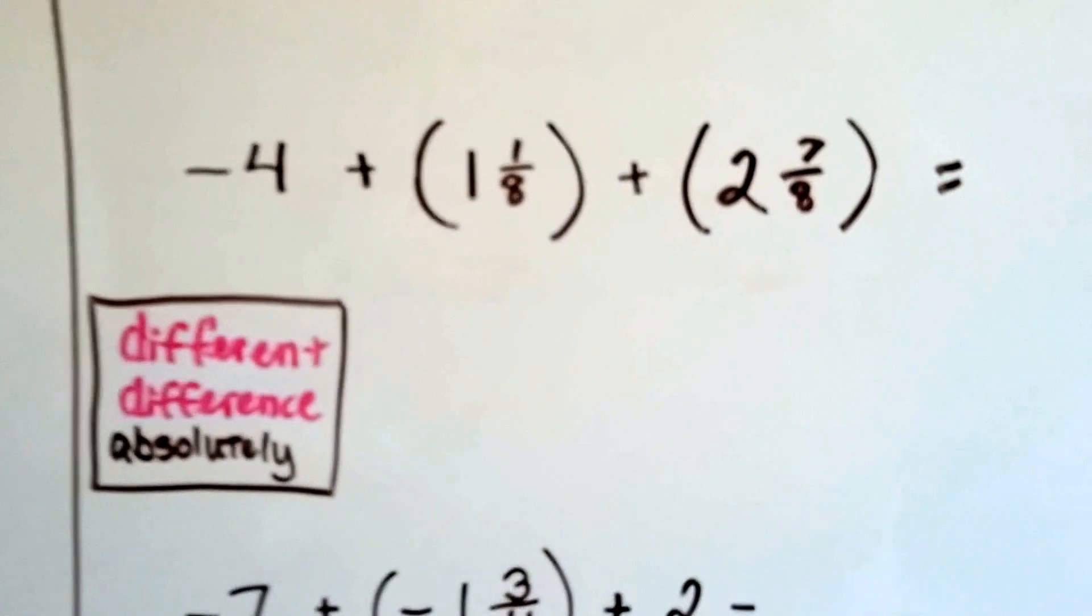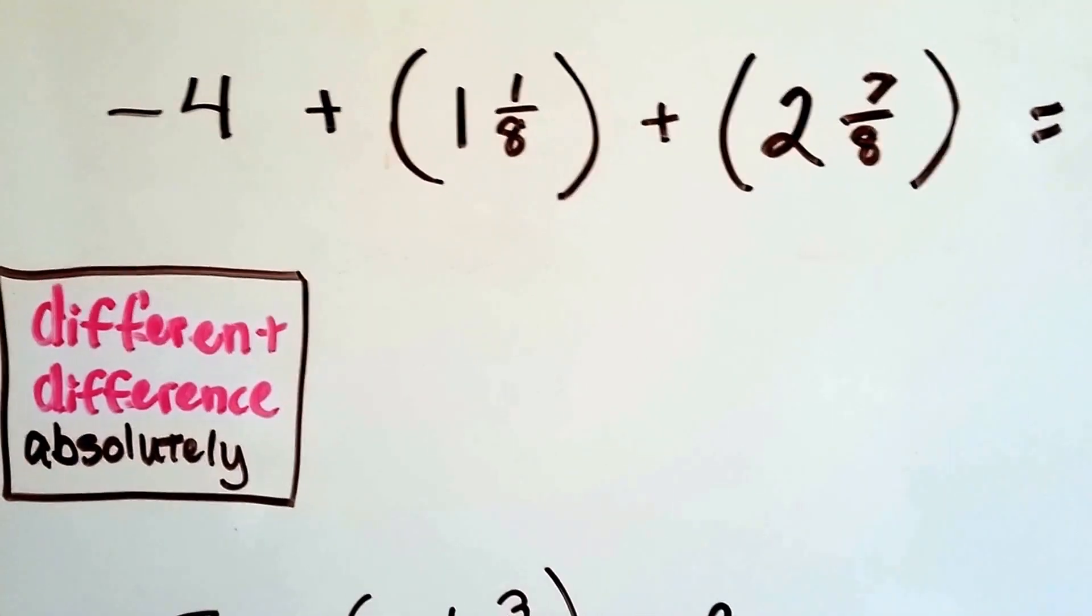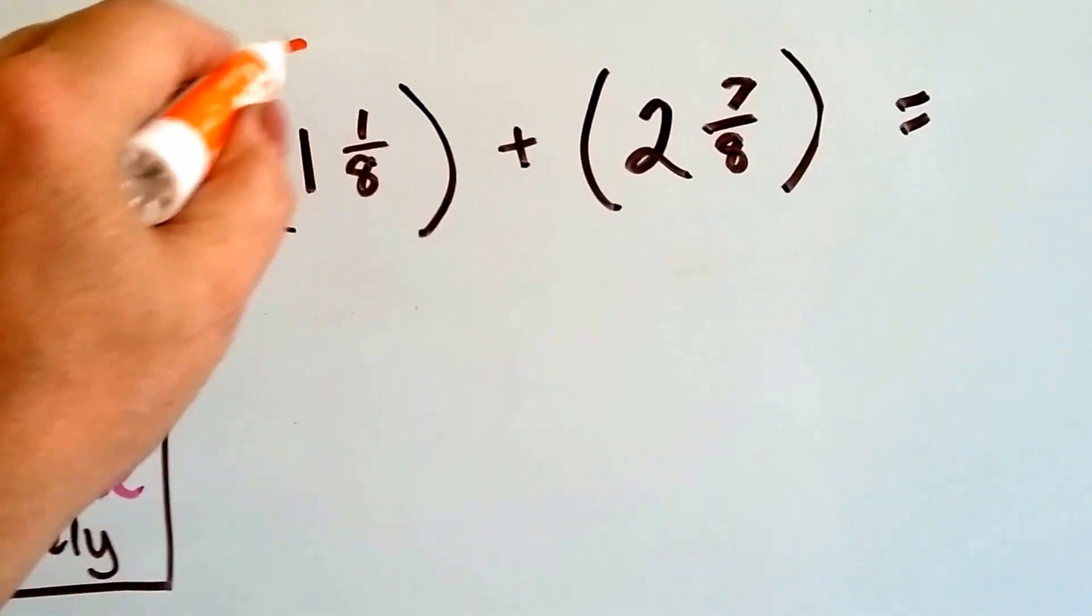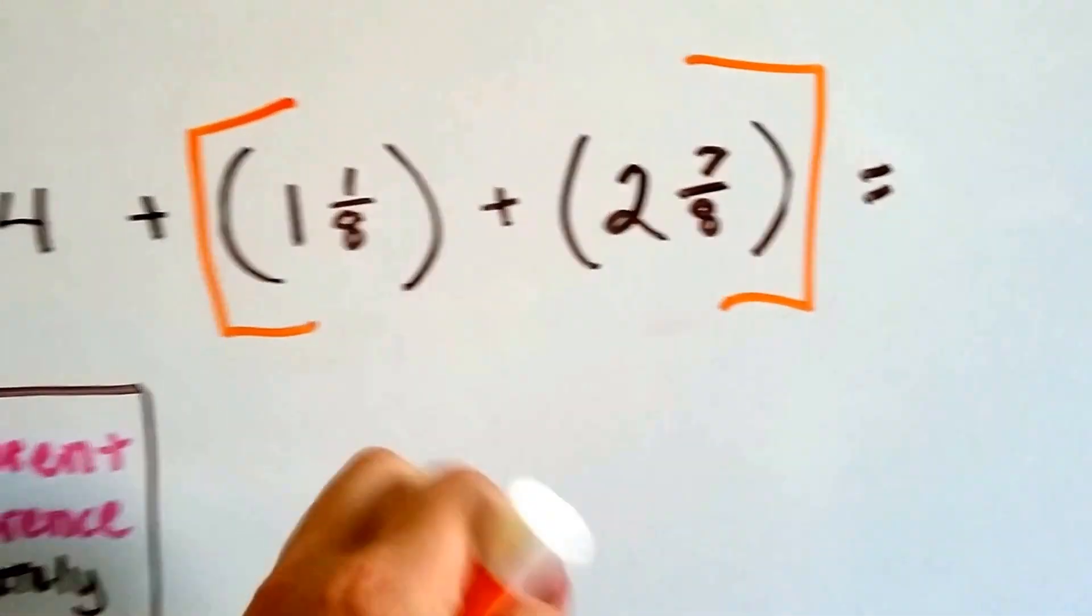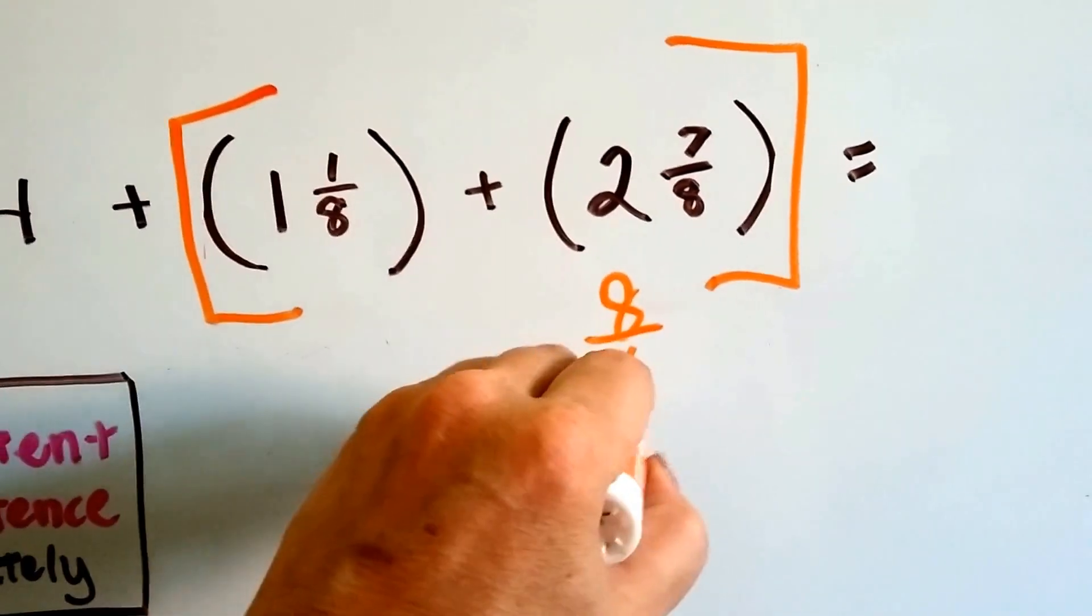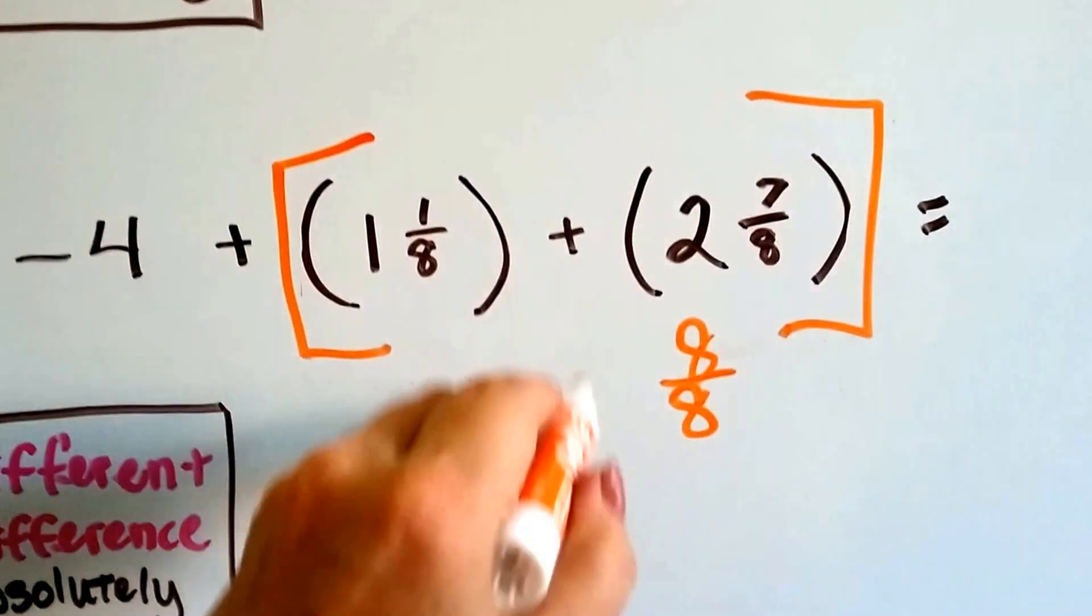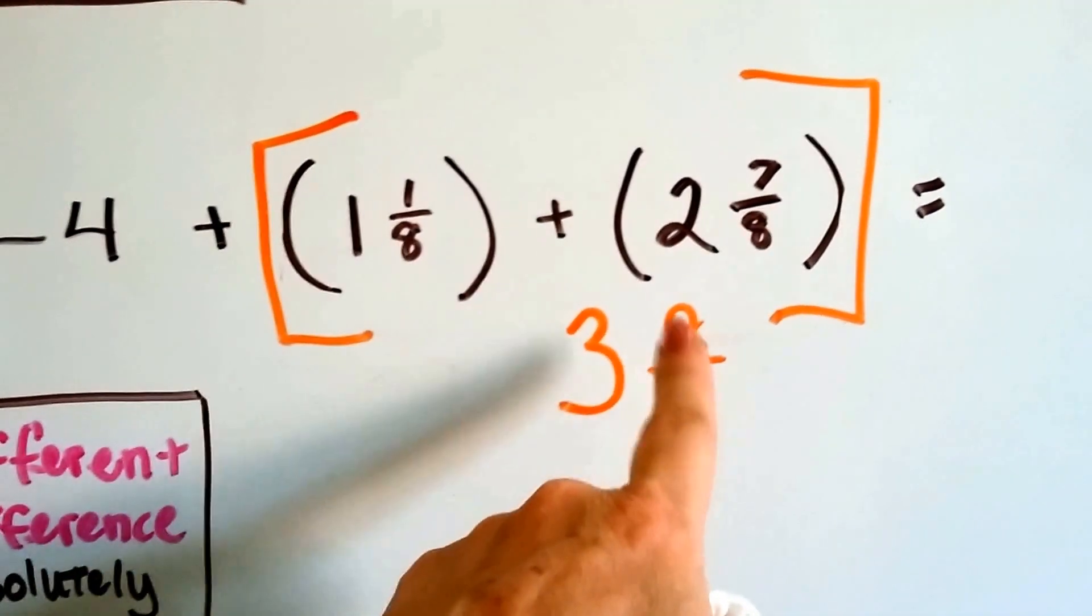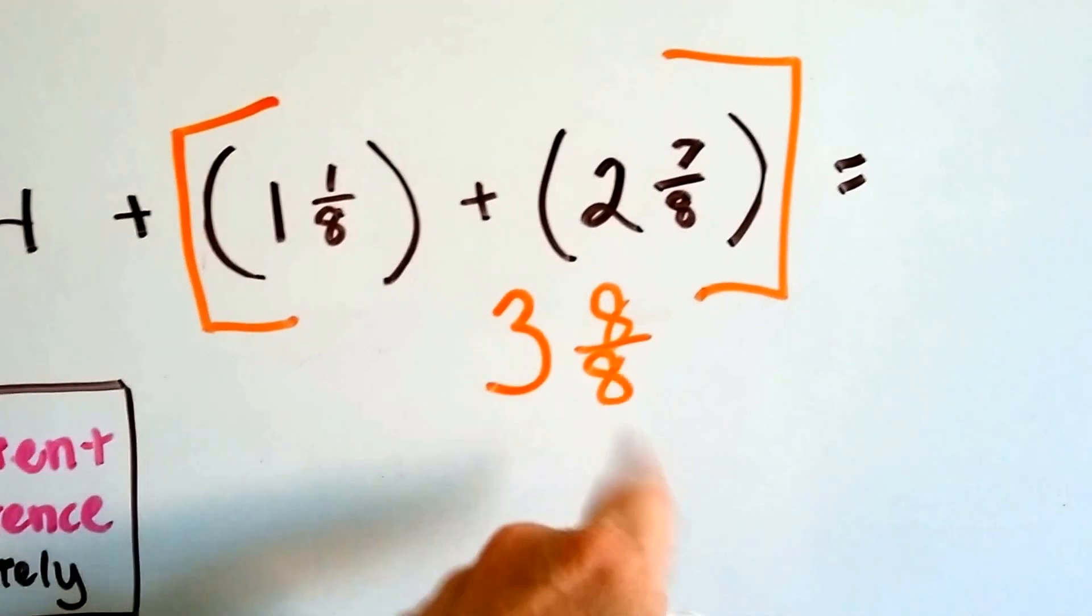Alright, let's check this one out. We have a negative 4 plus 1 and 1 eighth plus a 2 and 7 eighths. We're going to group together the positive numbers. And 1 eighth plus 7 eighths makes 8 eighths, right? And the 1 and the 2 makes a 3. And when we simplify this, because the numerator and denominator are the same, it equals 1. We have 3 plus 1. It's a 4.